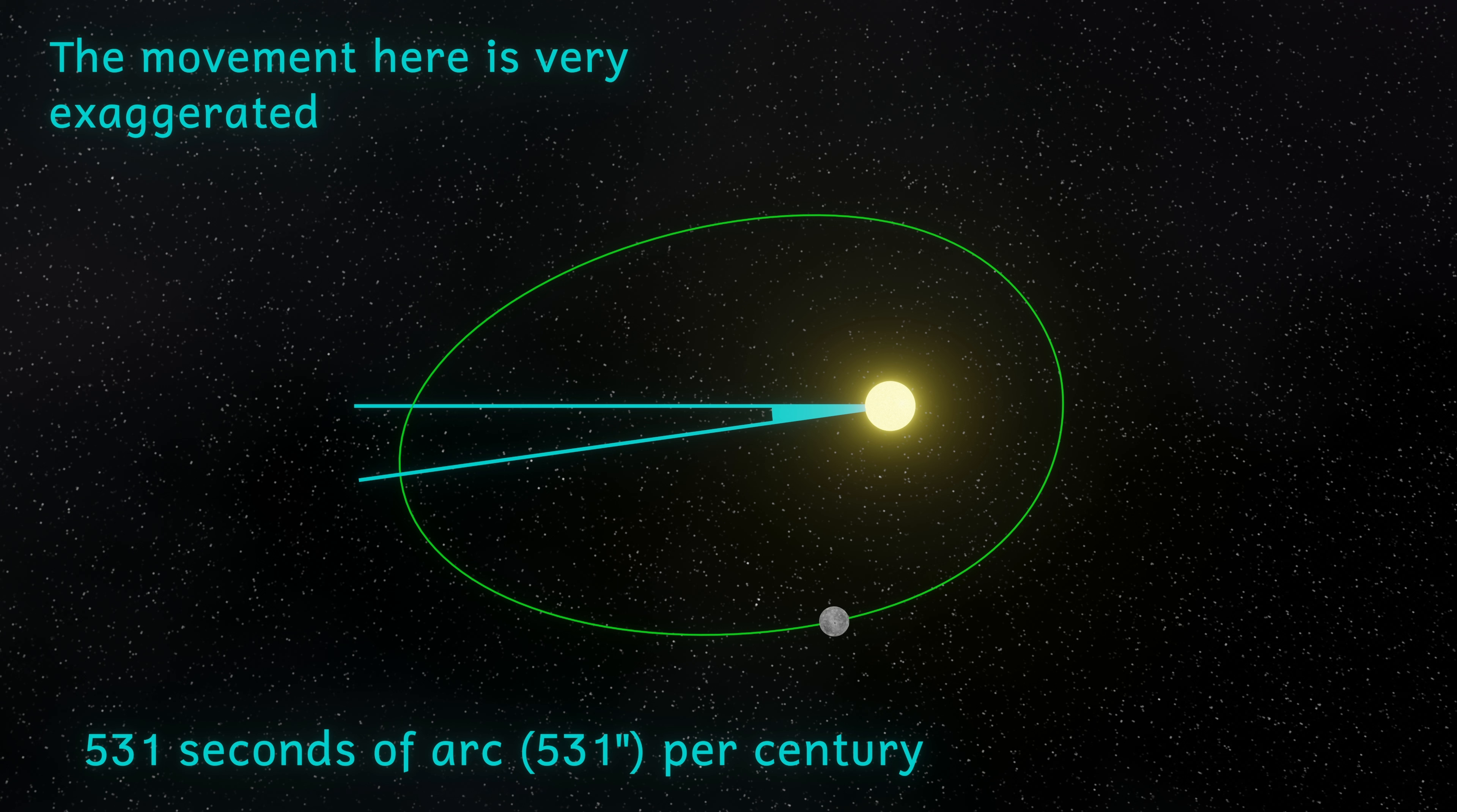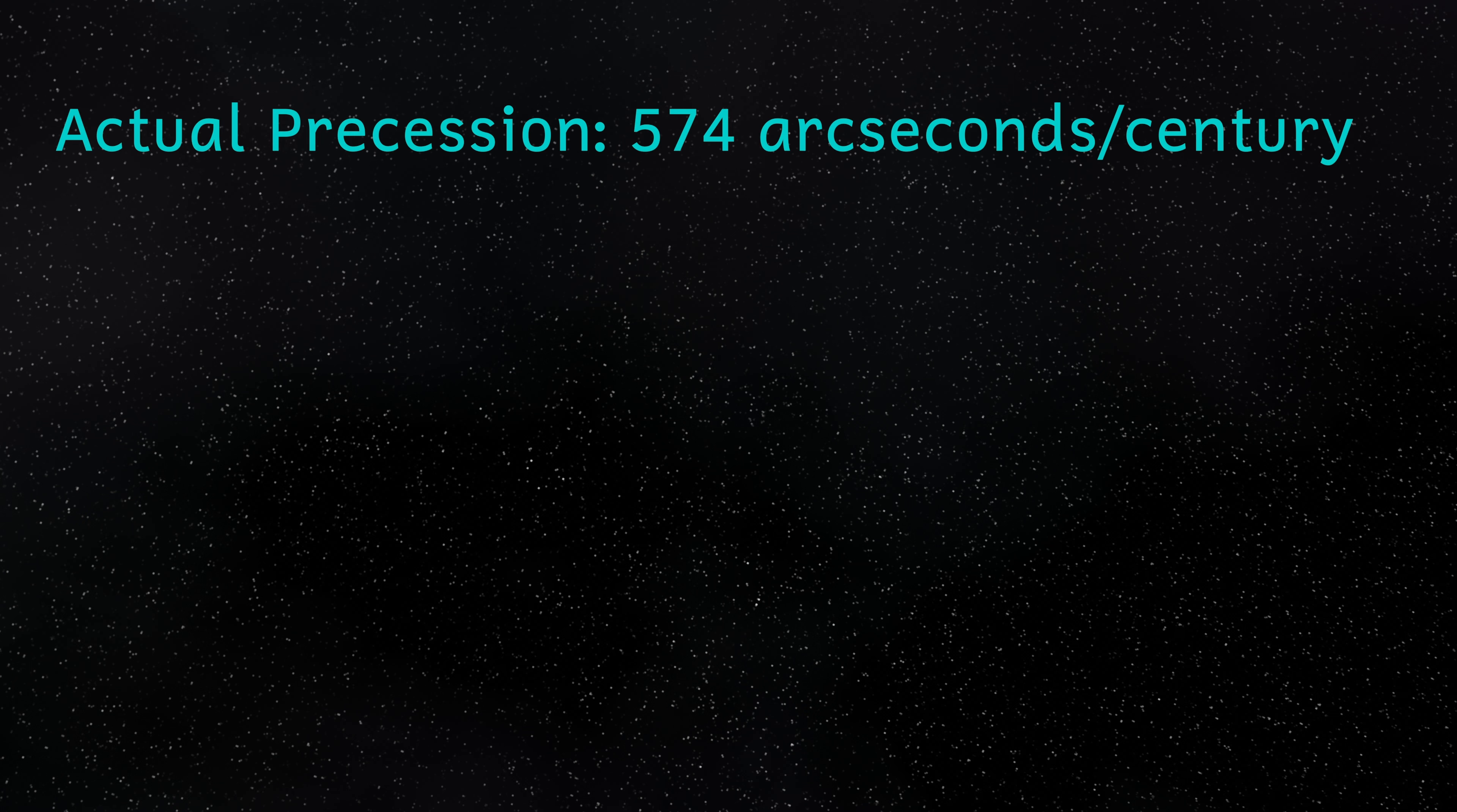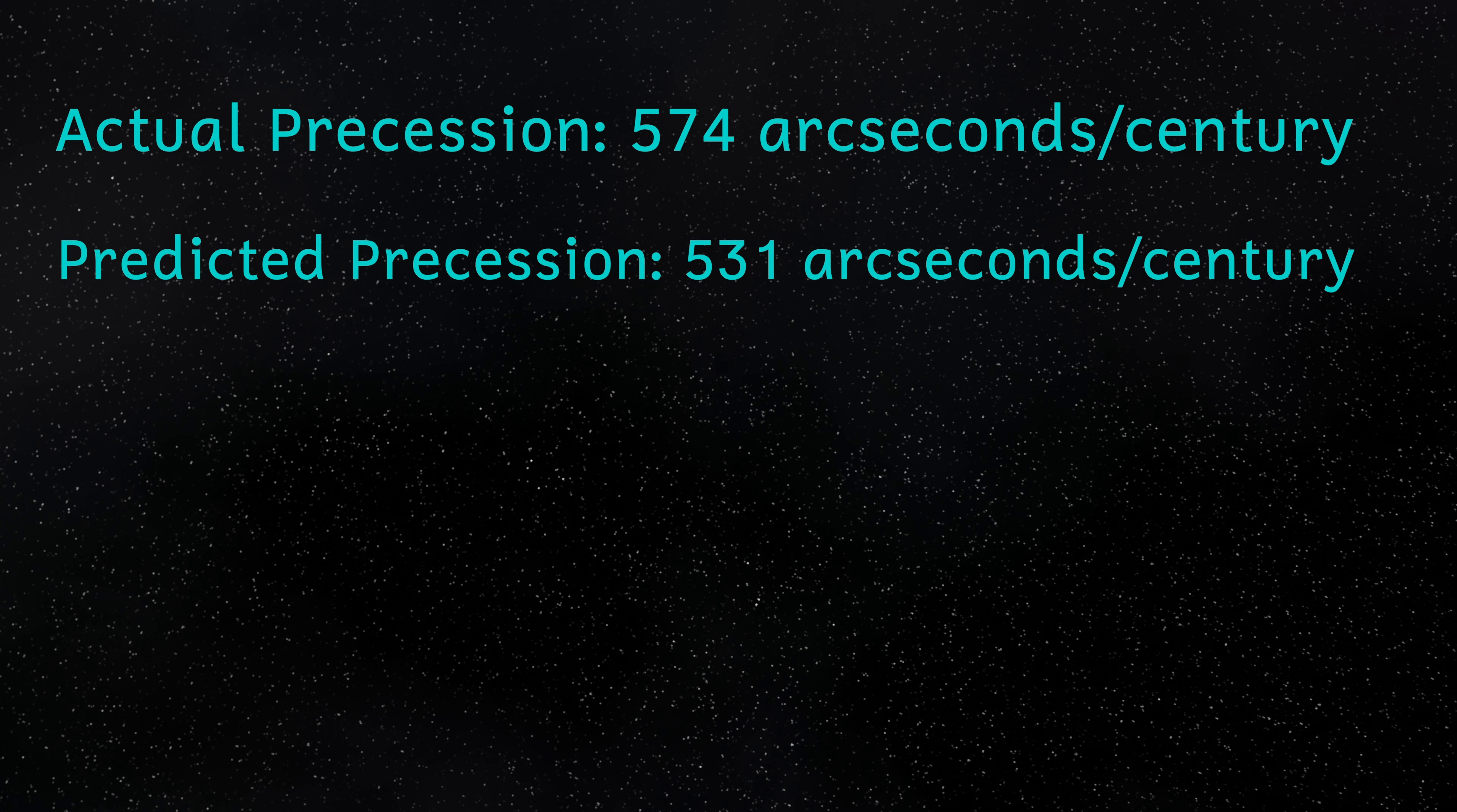These calculations take into account the effect that the other planets have on each other, also the slight deformation of the Sun due to its spin, and the fact that the Earth is rotating and orbiting, and is therefore not an inertial frame of reference. However, measurements of the precession of Mercury give a value of 574 seconds of arc per century. That's a discrepancy of 43 arc seconds per century.